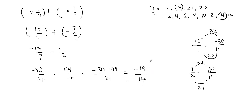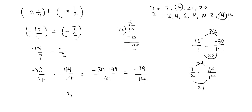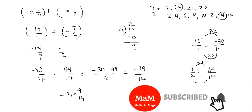Now negative 79 over 14 is an improper fraction. We cannot leave our final answer in this form, so we'll have to convert this into a mixed fraction. I'm going to divide 79 by 14 — forget about the negative sign for a bit. 14 will go into 79 five times. 14 times 5 is going to be 70, and then 9 is your remainder. The quotient becomes my whole number, the remainder becomes my fraction's numerator, and the divisor becomes my fraction's denominator. And remember, I ignored the negative sign — I have to put that negative sign in front of my mixed fraction. So this will be our final answer: negative 5 and 9 over 14.